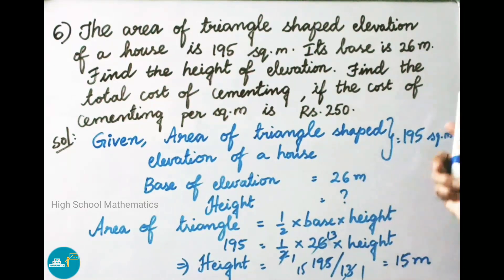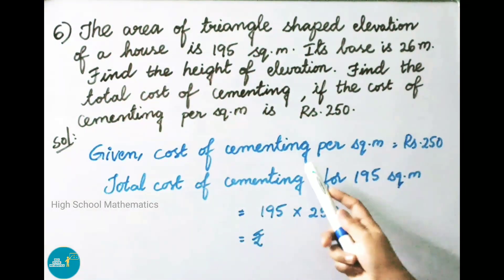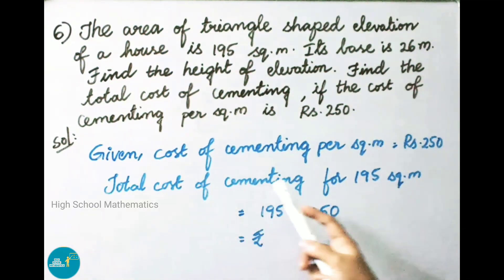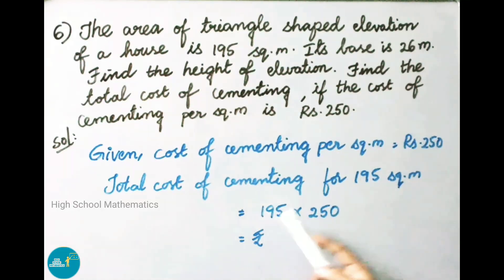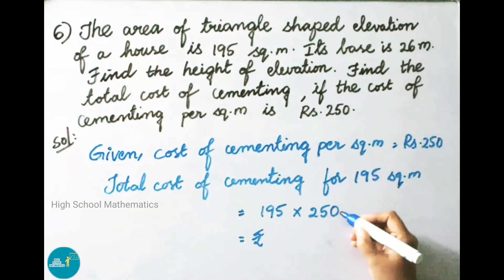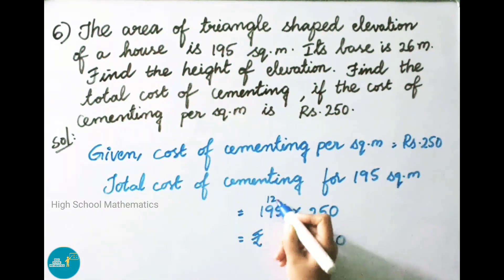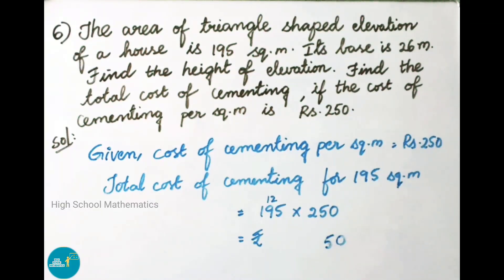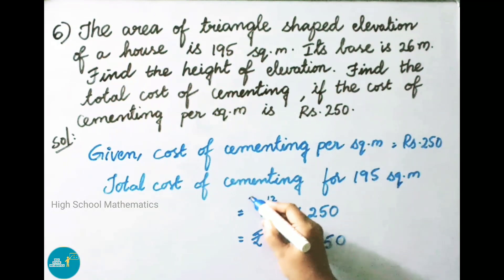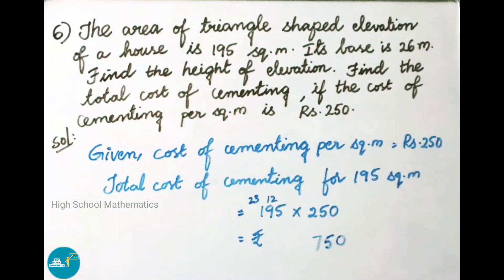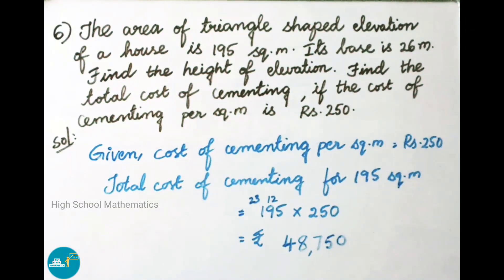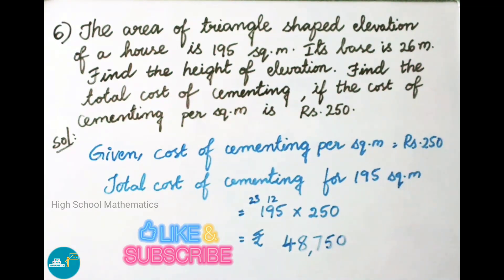Cost of cementing per square meter is 250 rupees. Total cost of cementing for 195 square meters equals 195 into 250. Working through the multiplication: 25 fives are 125, write 5 carry 12; 25 nines are 225 plus 12 is 237, write 7 carry 23; 25 ones are 25 plus 23 is 48. Therefore total cost of cementing for 195 square meters is 48,750 rupees.